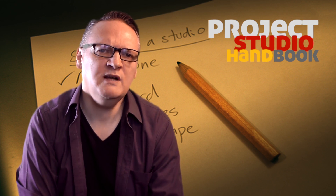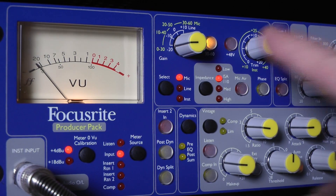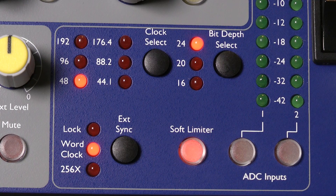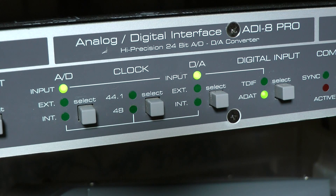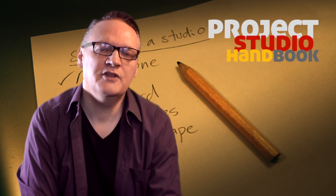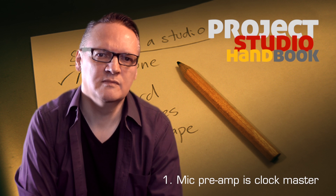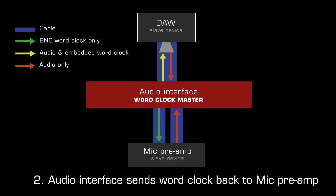However, when you have a one-way digital audio signal connection, such as from a microphone pre-amplifier voice channel with its own built-in analog-to-digital converter which is being connected to an audio interface, and the interface is the clock master, the mic pre-amp has no way to synchronise to the system. There are two solutions. Number one, set the mic pre-amp as the clock master device. And number two, send word clock from the interface to the pre-amplifier voice channel.